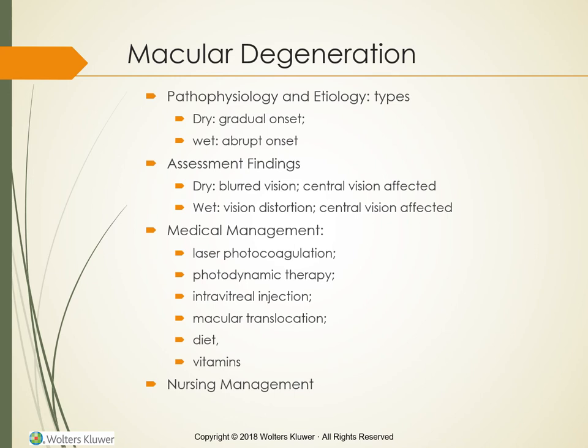Macular Degeneration is the breakdown of or damage to the macula — the point on the retina where light rays converge for the most acute visual perception. The disorder usually occurs in both eyes but vision in one eye tends to deteriorate more rapidly. Age-related macular degeneration (AMD) tends to affect older adults and is the leading cause of vision loss in clients older than 50 years of age. Risk factors include race (more common among whites), smoking, and family history. Genetic components have been identified but there is not yet a specific genetic test for AMD.